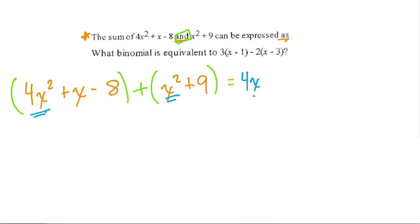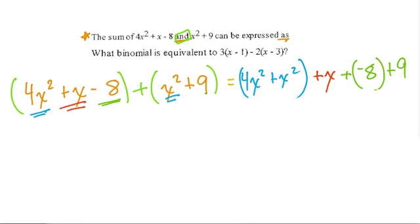So first I'll pair 4x squared plus x squared. That's our first group. And then we have x all by itself. There's no like term here, just the number 9. And then be careful here on the last step, we're adding 9 and negative 8. So don't forget that's a negative there. Negative 8 plus 9. So now we can simplify.